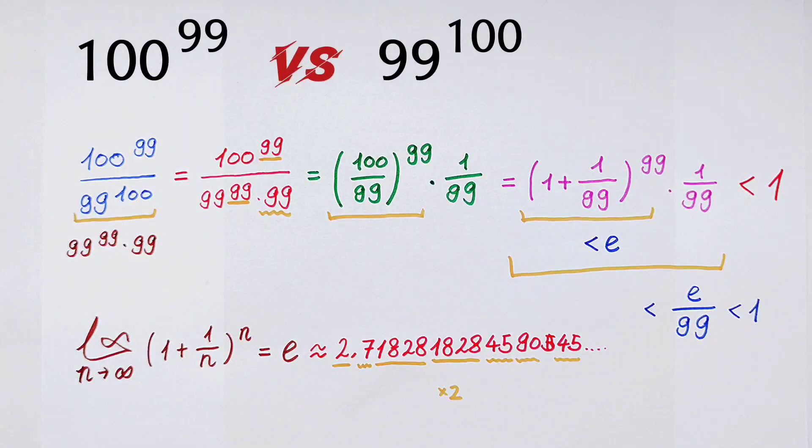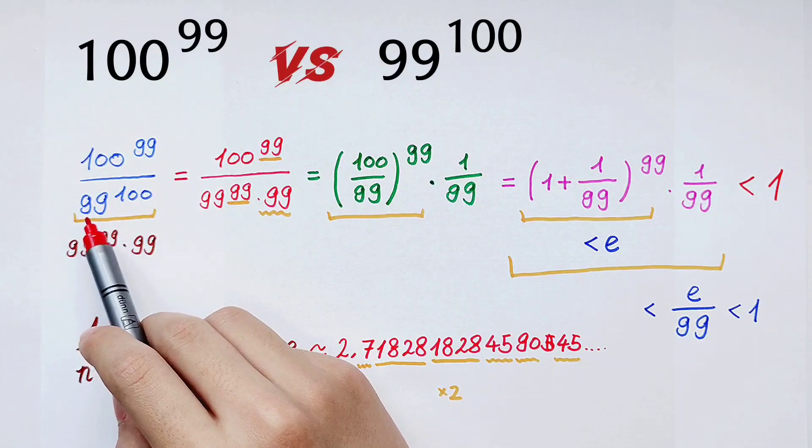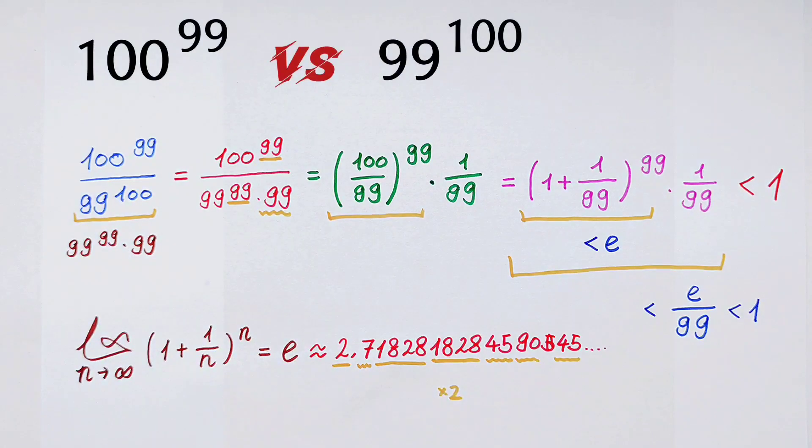We have got the final answer. That is, 100^99 is smaller than 99^100.